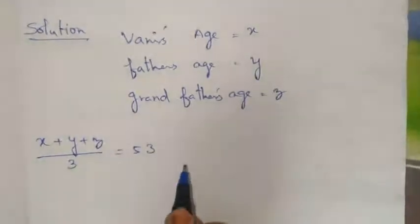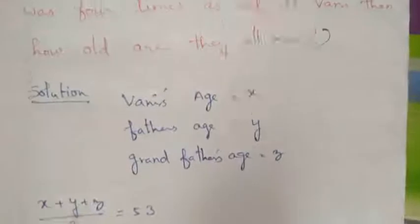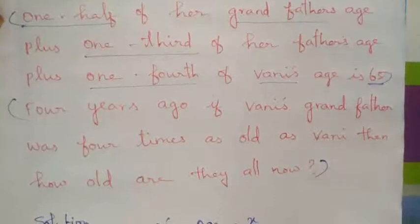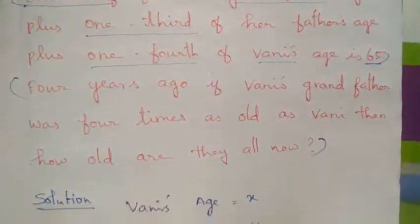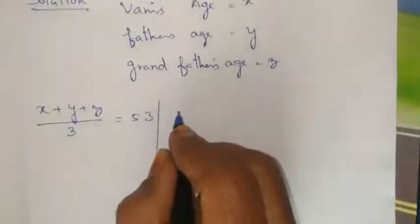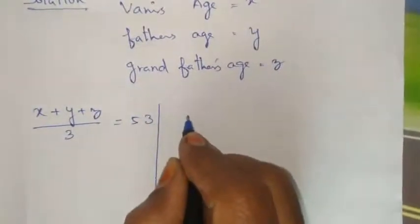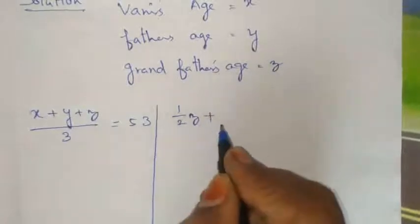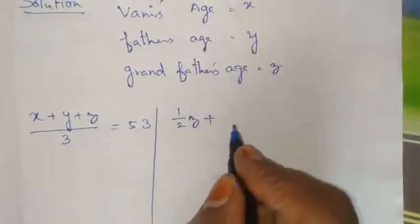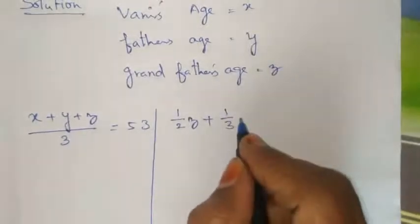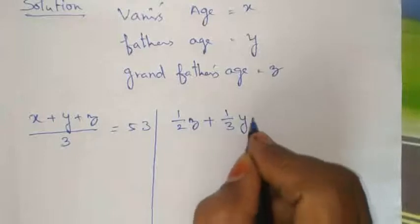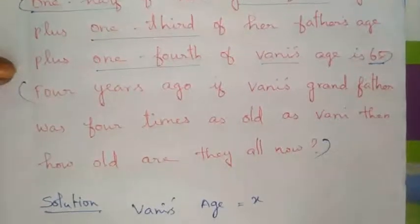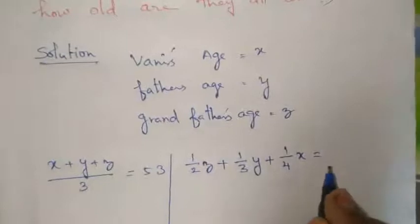Second equation: one half of grandfather's age, plus one third of father's age, plus one fourth of Vani's age equals 65. That is z over 2 plus y over 3 plus x over 4 equals 65. Multiplying through by LCM 12: 6z plus 4y plus 3x equals 780.